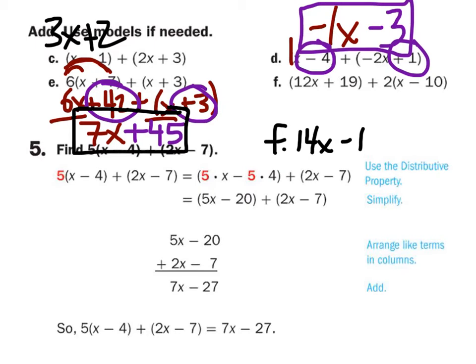Let's look, actually, at that. Thank you, Morgan. If we look at D, it's negative 1x minus 3. Another way we could write this is negative x minus 3. That's another way we can do it.